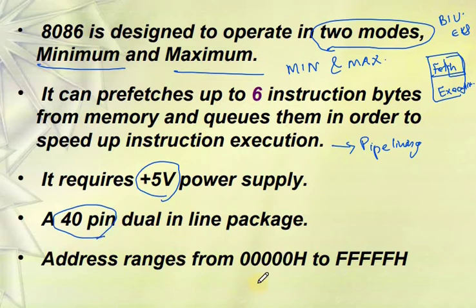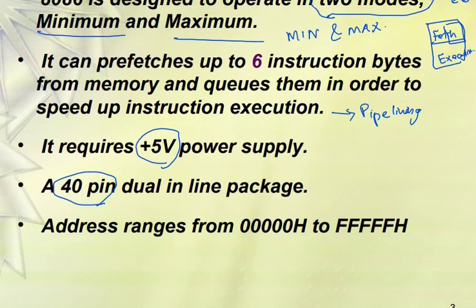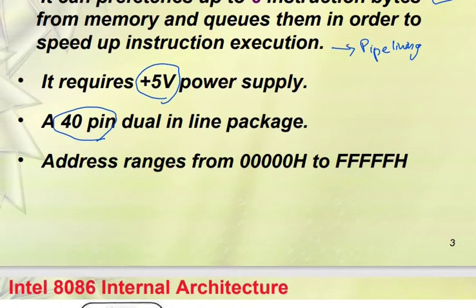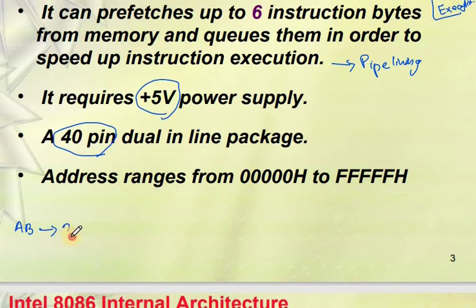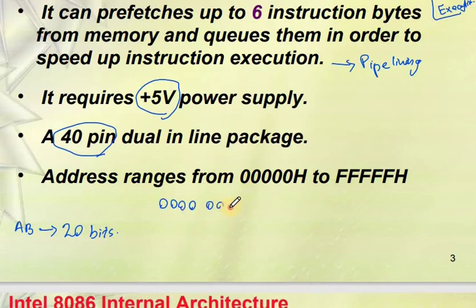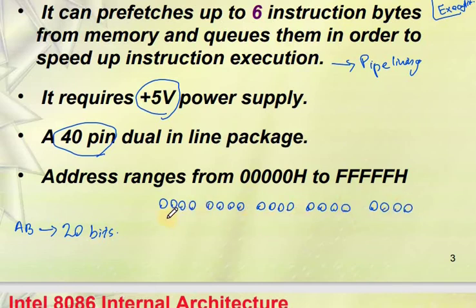Regarding the address range — the address bus size of the 8086 is 20 bits. Using 20 bits, and grouping into sets of 4 bits for hexadecimal representation, we get 5 hexadecimal digits.